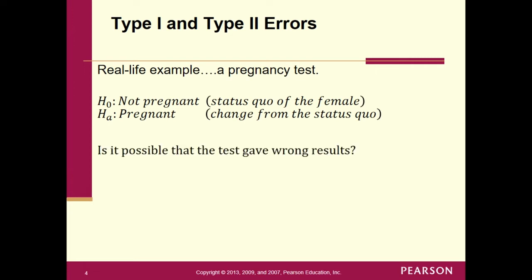Is it possible the test gave wrong results? If someone took a pregnancy test and got a positive sign but doesn't want to be pregnant, she might take another test hoping for a different result. Similarly, if someone wanted to be pregnant and got a negative, they may retake the test a day later, letting hormones build up enough for the test to detect them. That's exactly what we're talking about here.